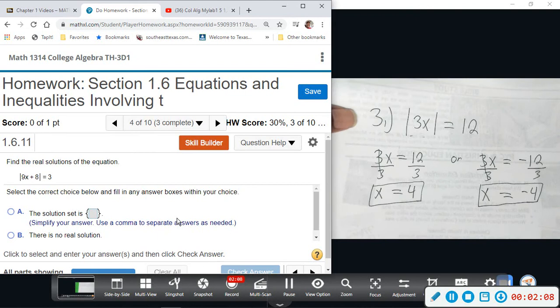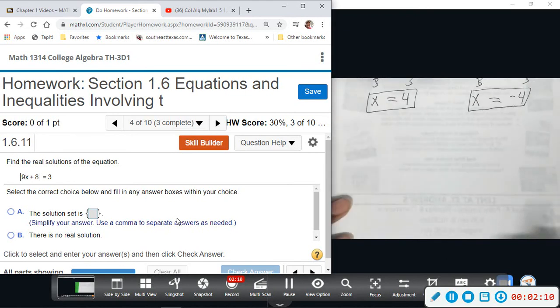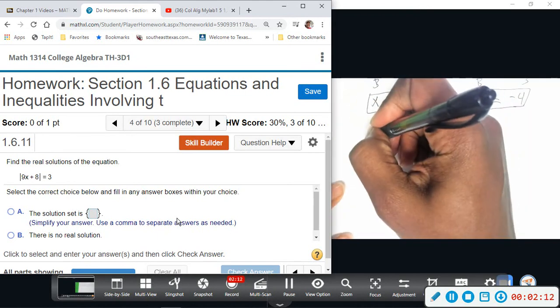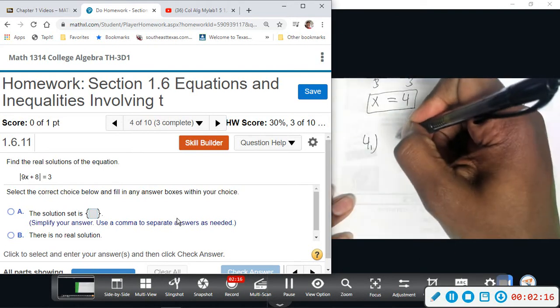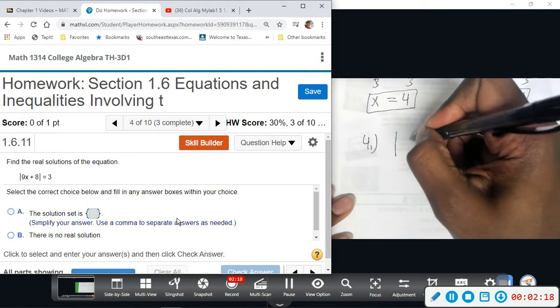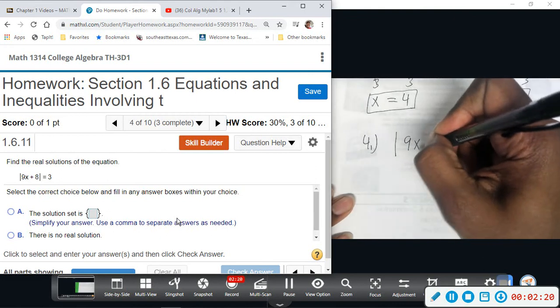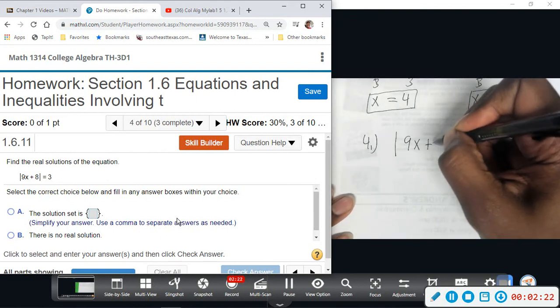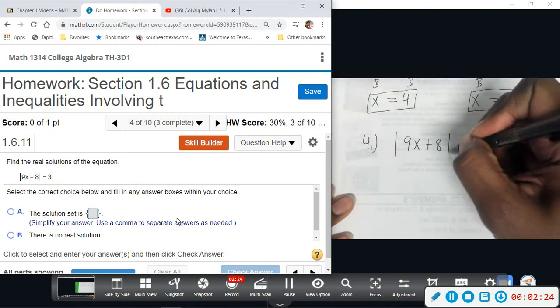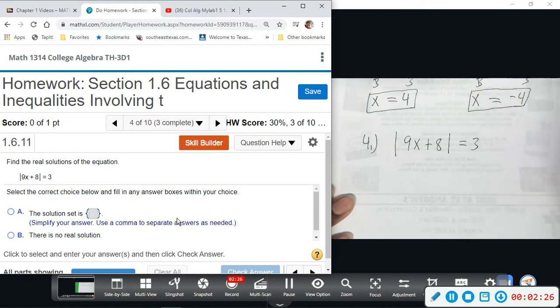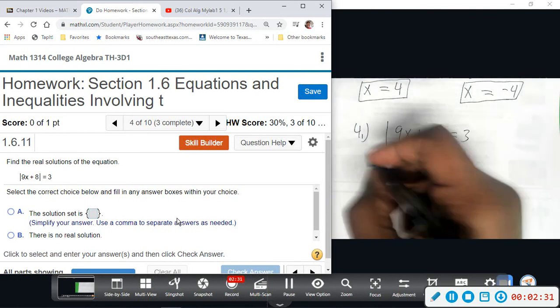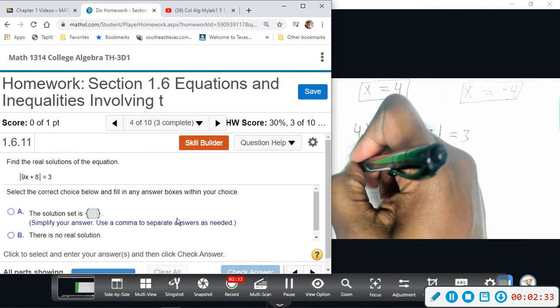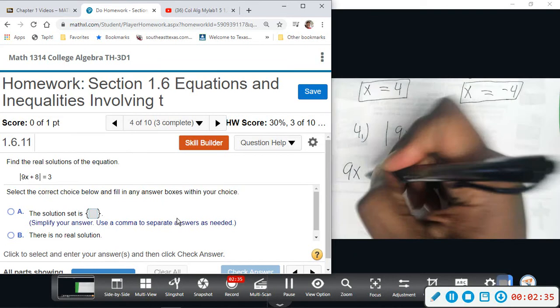All right, number 4. Similar, we just have a bigger linear equation. So again, absolute value 9x plus 8 equals 3. We're going to solve it again, set it up twice. So we set up the positive one: 9x plus 8 equals 3.